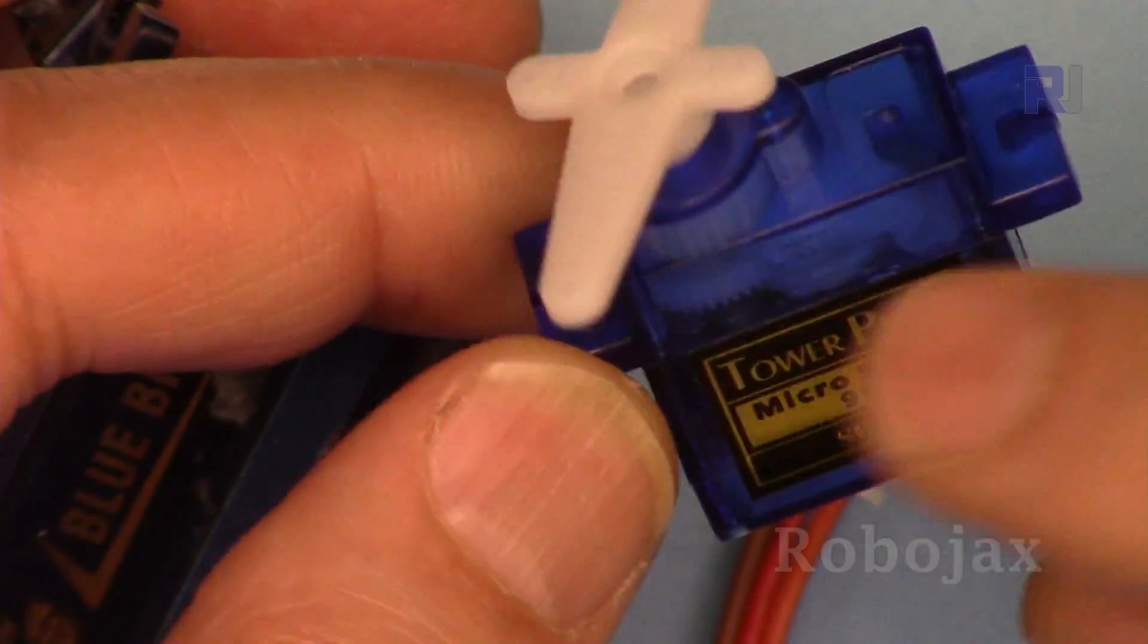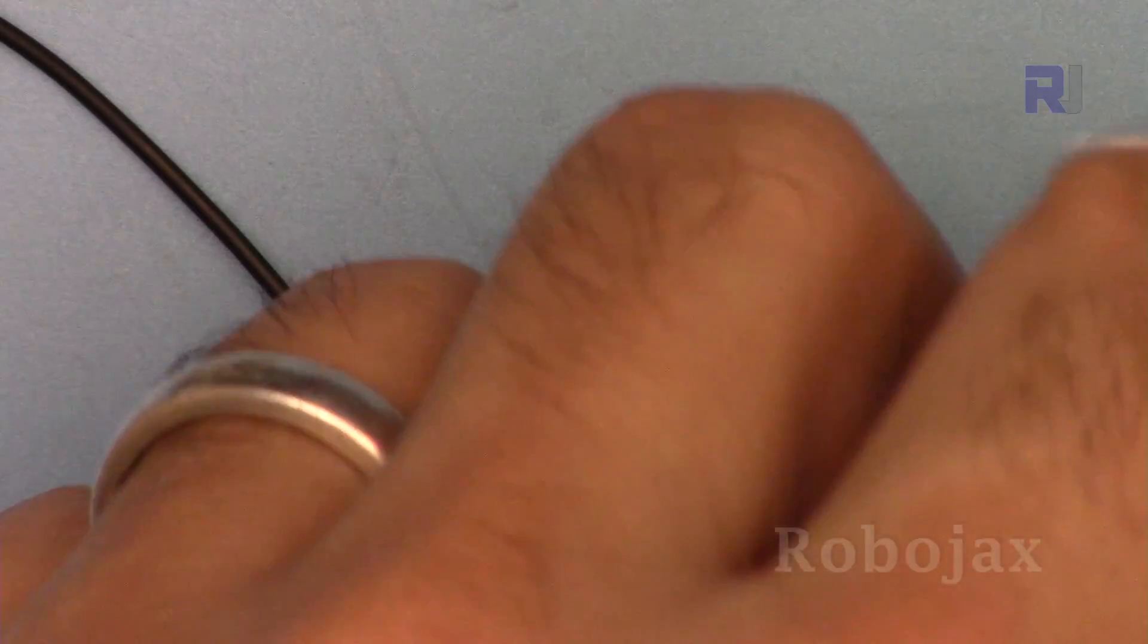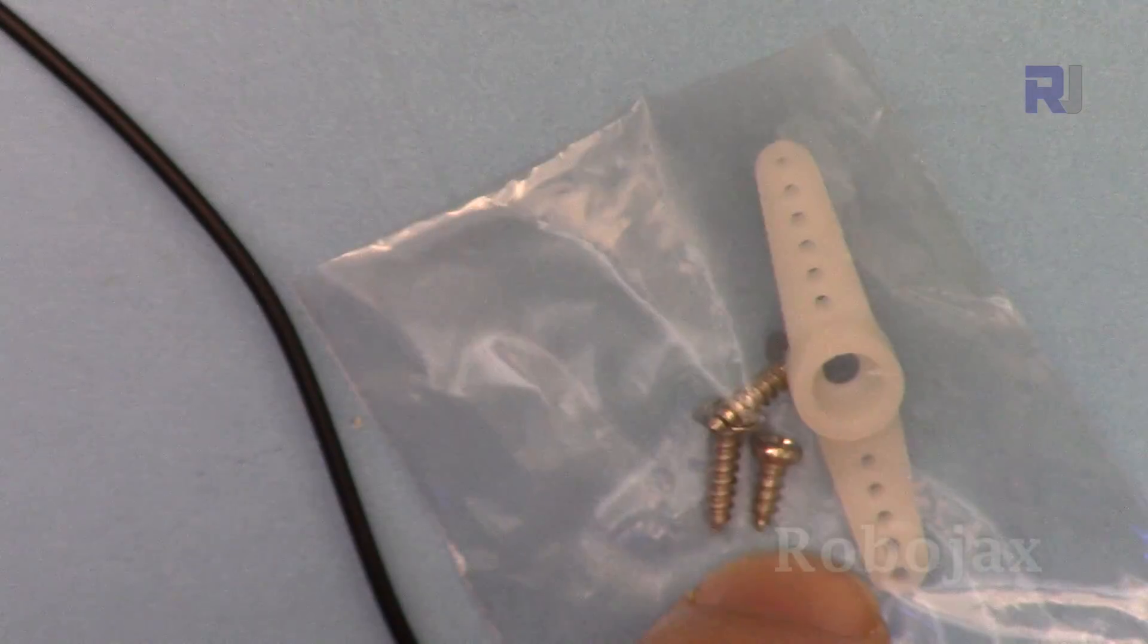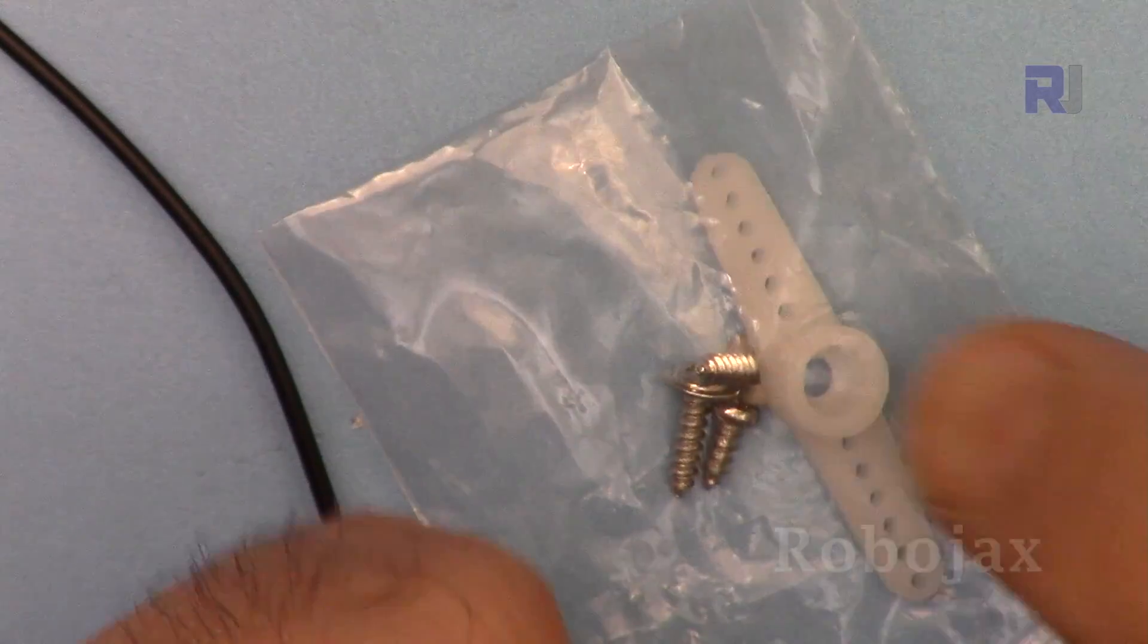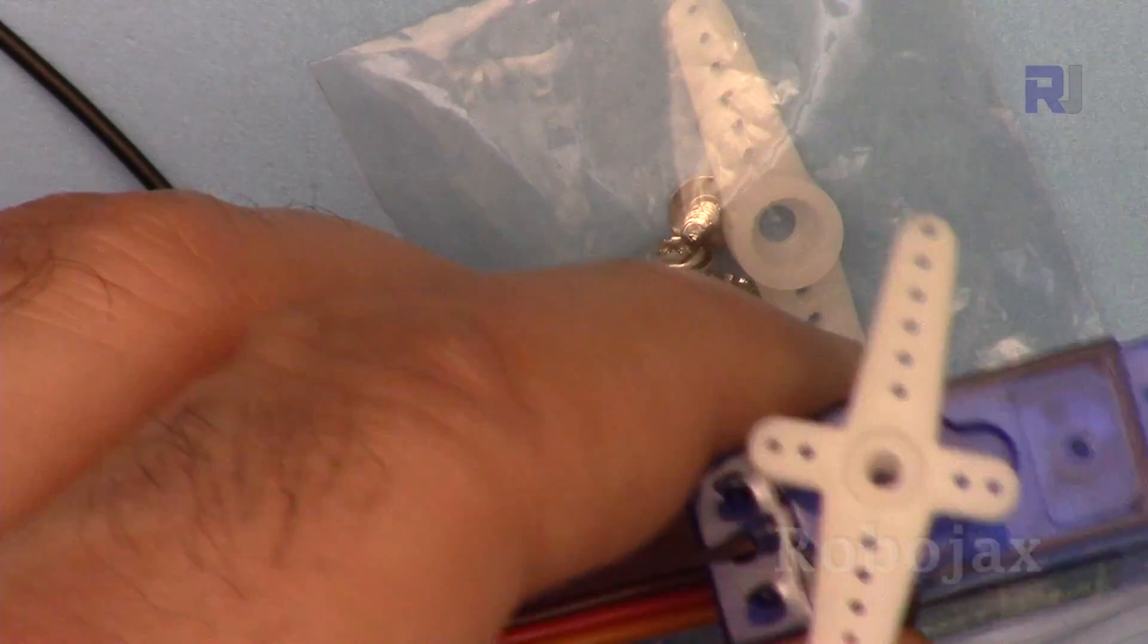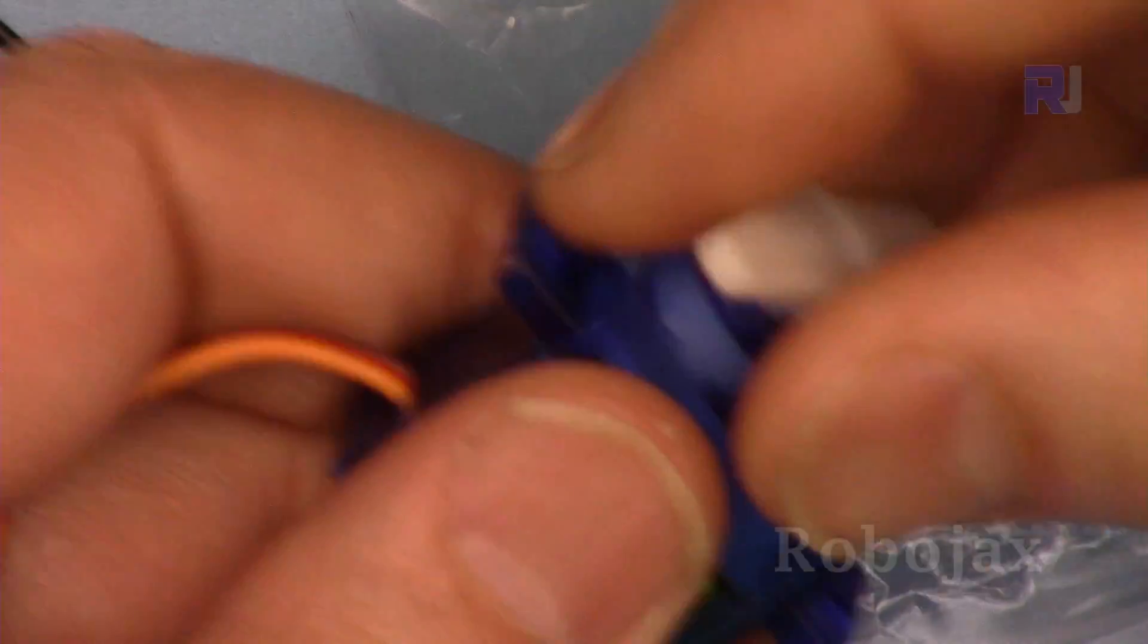When you purchase it, usually they ship it with this half arm or maybe this type of arm or that type of arm. These can be used for different purposes and you can attach them.